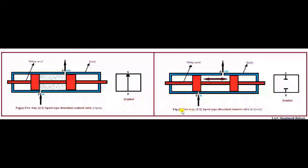Now we will discuss about case 2. From figure B, after the spool gets actuated or moved horizontally with the help of push buttons or any solenoids, the spool will move and block the inlet port P so that fluid will not enter into the valve. In this symbol, port P and port A are blocked — fluid from P will not enter into port A because the spool is blocking the way.